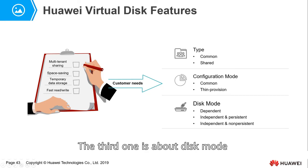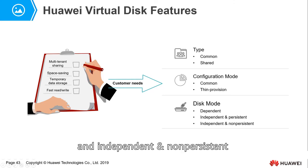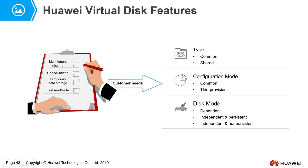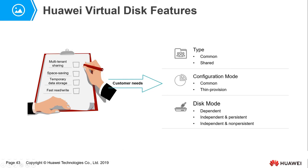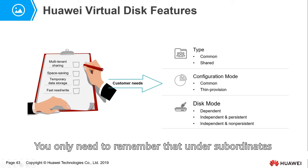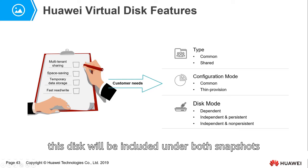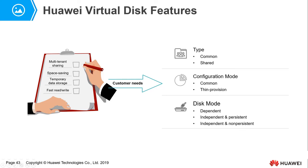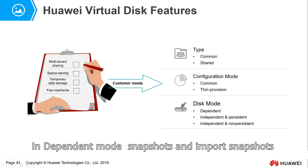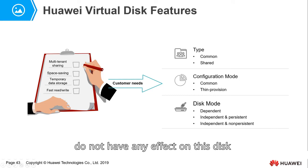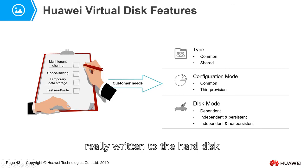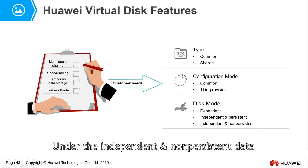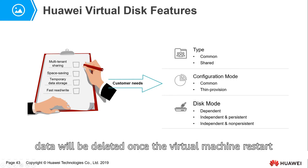The third is disk mode, which has three options: dependent, independent persistent, and independent non-persistent. The biggest difference between dependent and independent is whether the disk is affected by snapshots. Under dependent mode, this disk is included when taking and restoring snapshots. Under independent mode, snapshots and restoring snapshots have no effect on the disk. Independent persistent data is flushed and written to the hard disk. Under independent non-persistent mode, data is not flushed and will be deleted once the virtual machine restarts.